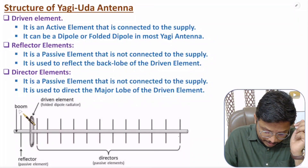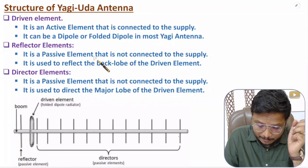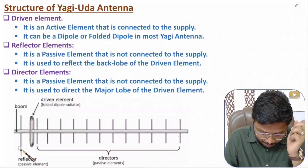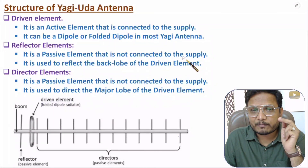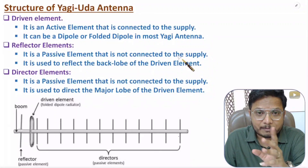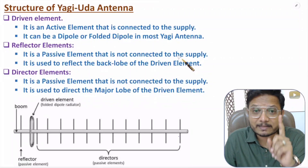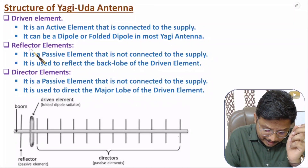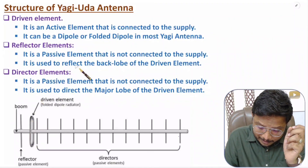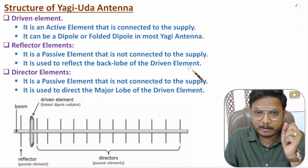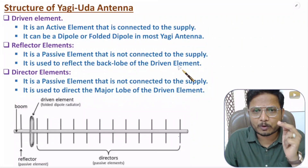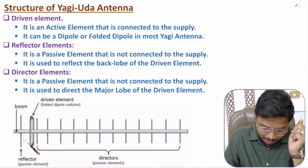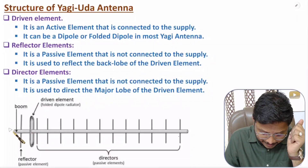Here you can observe the reflector element, which is a passive element. The reason is we don't connect power supply with the reflector element — that's why it is a passive or parasitic element. This reflector element is used to reflect the back lobe of the driven element — it reflects power which is coming from the back side.